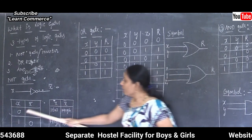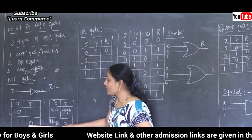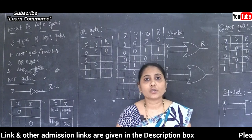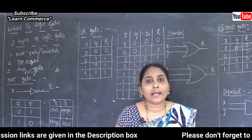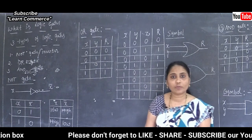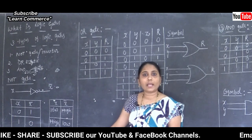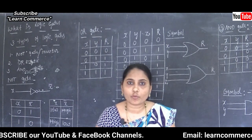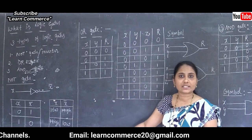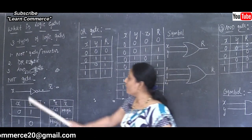When input is 0, output is 1. When output is 0, then input is 1. An inverter or NOT gate has only one input and one output signal, and the output state is always complement or opposite of the input state.